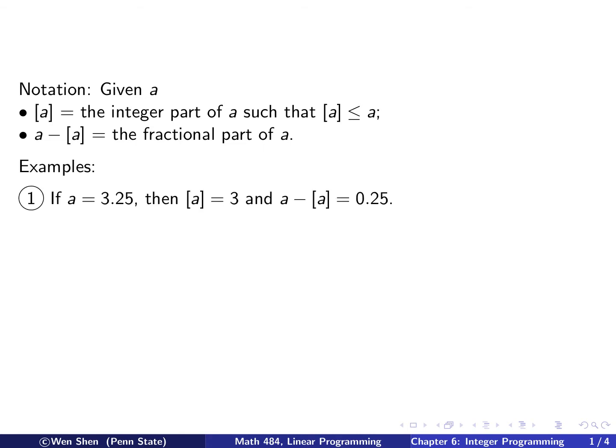Let's take some examples. First example, let's say A equals 3.25. The integer part of A is 3, and then A minus the integer part, the fractional part, is 0.25. The second example, probably more interesting: let's say A is negative 3.25.